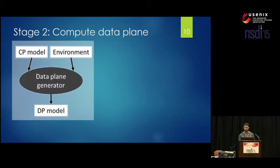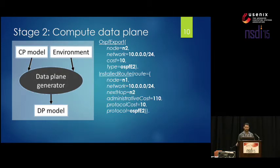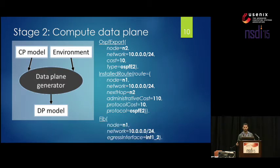Going back to the running example, we have the OSPF export relation — facts in this relation indicate routes that should be redistributed into OSPF. From the running example, router N2 is redistributing the 10.0.0.0 network into OSPF with a cost of 10. These derived relations get used by other derived relations. Later in the computation, the installed route relation represents the routing tables populated on each node. For example, N1 will have an installed route fact saying it has a route to 10.0.0.0 with next hop N2, received through protocol OSPF. The end result is the FIB relation representing the forwarding tables — N1 would have a FIB entry for the 10.0.0.0 network saying traffic should go out interface int1.2.